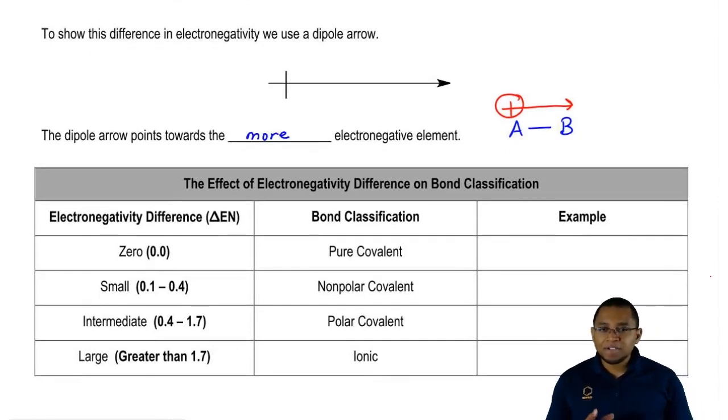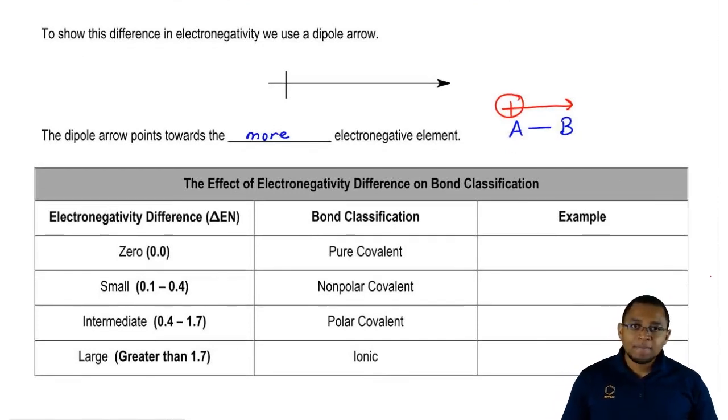The difference in electronegativities can have a big effect on the properties of the bond and the properties of the compound. We can classify them as different things.